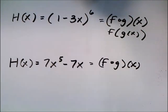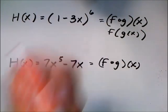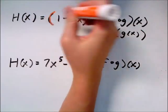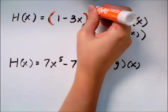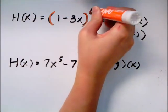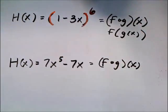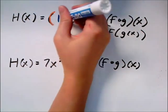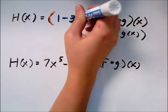So where can I look like something's plugged into something else? Well, especially when I have parentheses, because it's already kind of grouping stuff together. What if I treat something to the sixth as the outside function. And then maybe this piece was plugged into that.